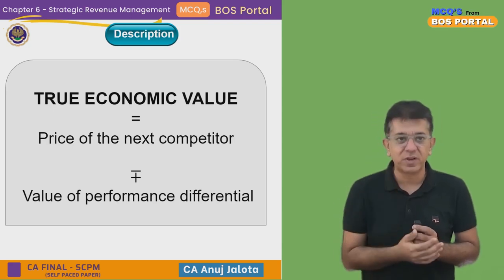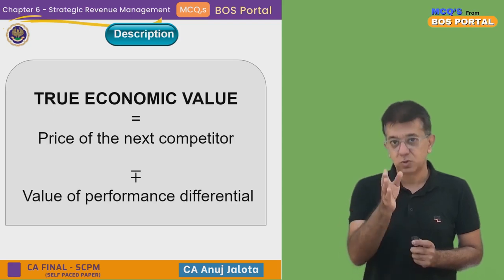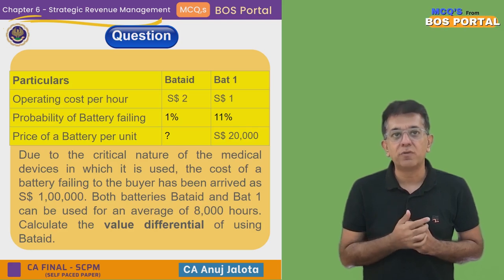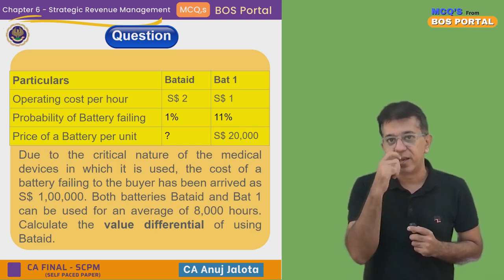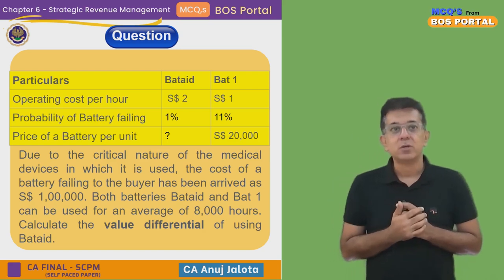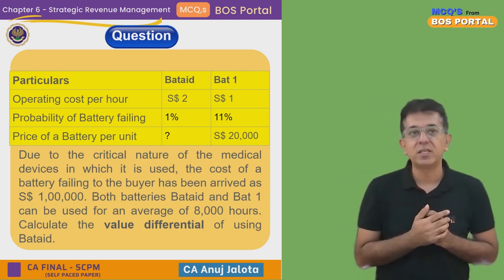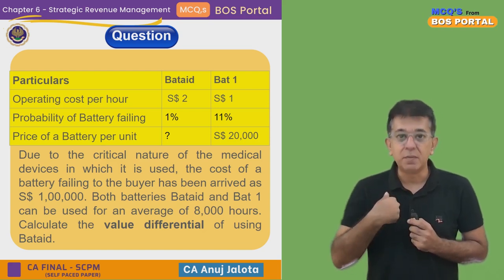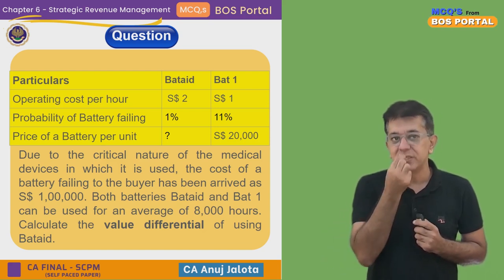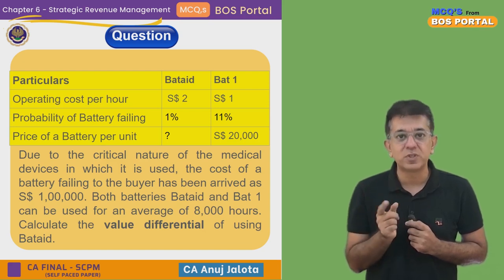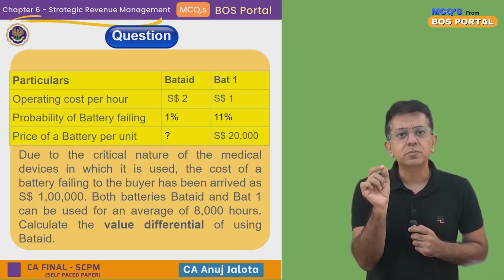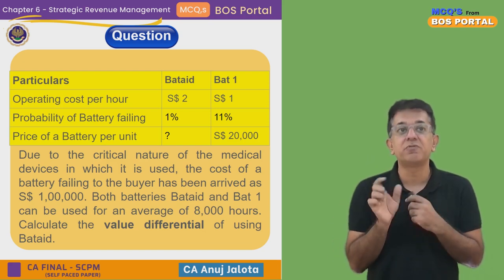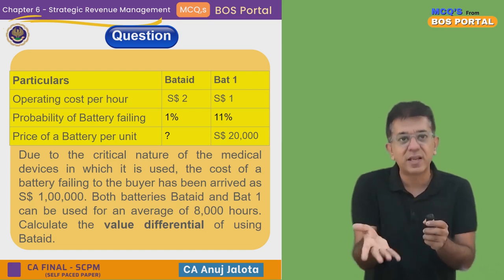We have to think similarly for this question. We need to find the value of performance differential of Batad. The advantage of Batad is that its probability of failing is only one percent compared to eleven percent for Bat One — so ten percent better. The cost of failure is one lakh rupees, so: ten percent × one lakh = ten thousand rupees is the advantage of Batad.